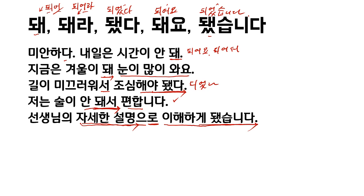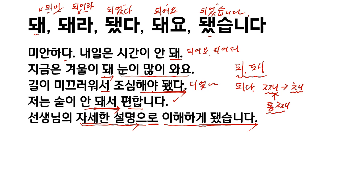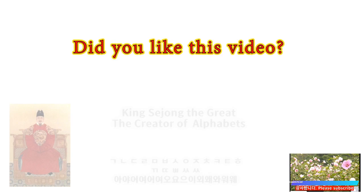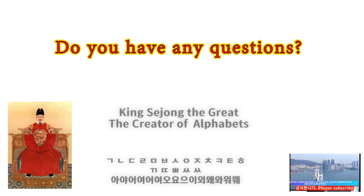So today we studied when to use 돼 and 되, and we also learned all the meanings of 되다. And then, even though this is written 채, a lot of people say 째. When 채 means 'including,' 통째, we say 통째로. 통째 means 'including everything.' 감자를 통째로 먹습니다 — we eat potato including everything, even the peel. Thank you very much. I'm Josh.